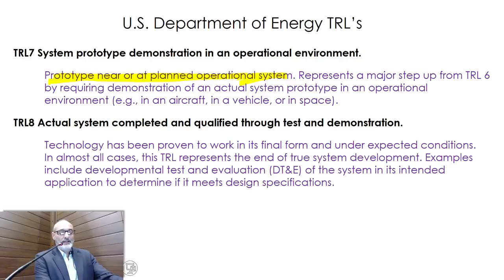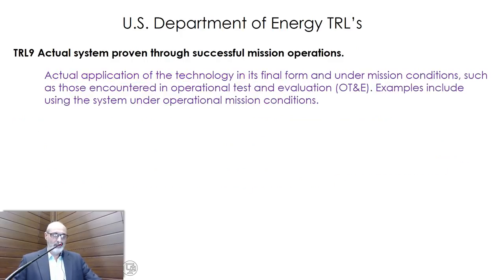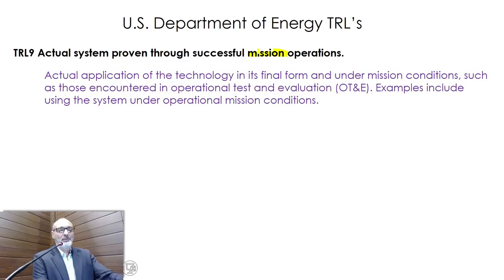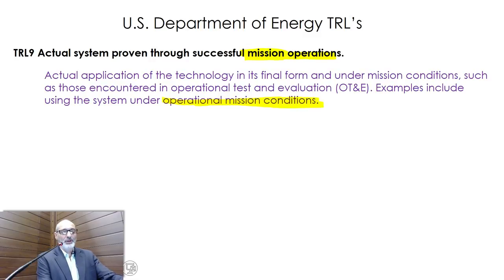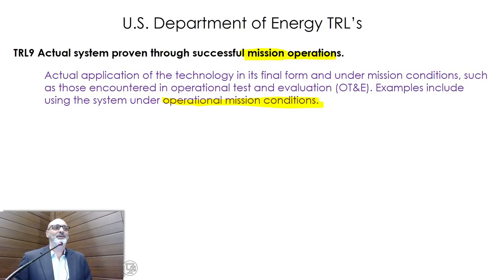TRL-8 is actually the final demonstration — if you accomplish TRL-8, you've demonstrated that your system will work. TRL-9 means you have proven that everything went well in actual mission conditions. The word 'mission' comes from NASA, meaning conditions that the application will encounter in outer space. For our purposes we must adapt this word, but I kept it here to link to the history of this development.